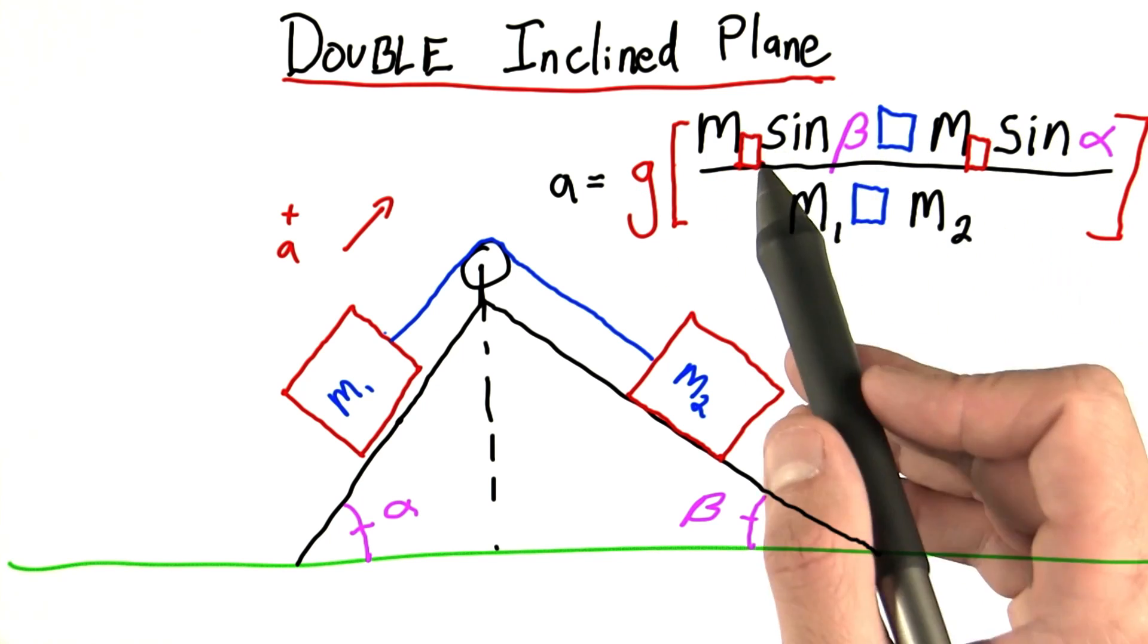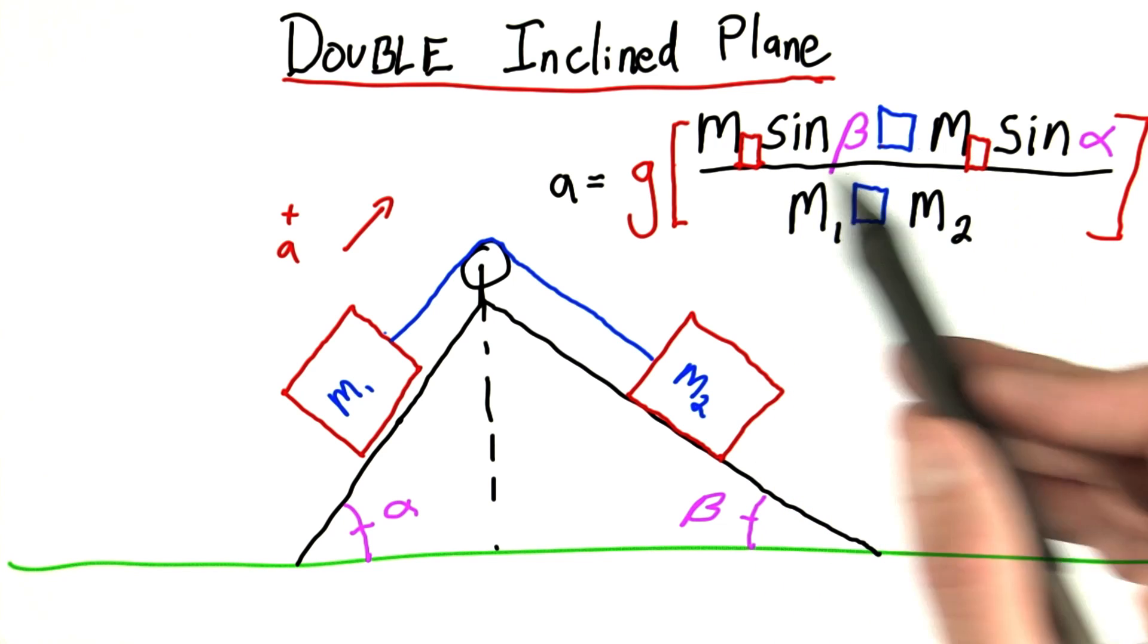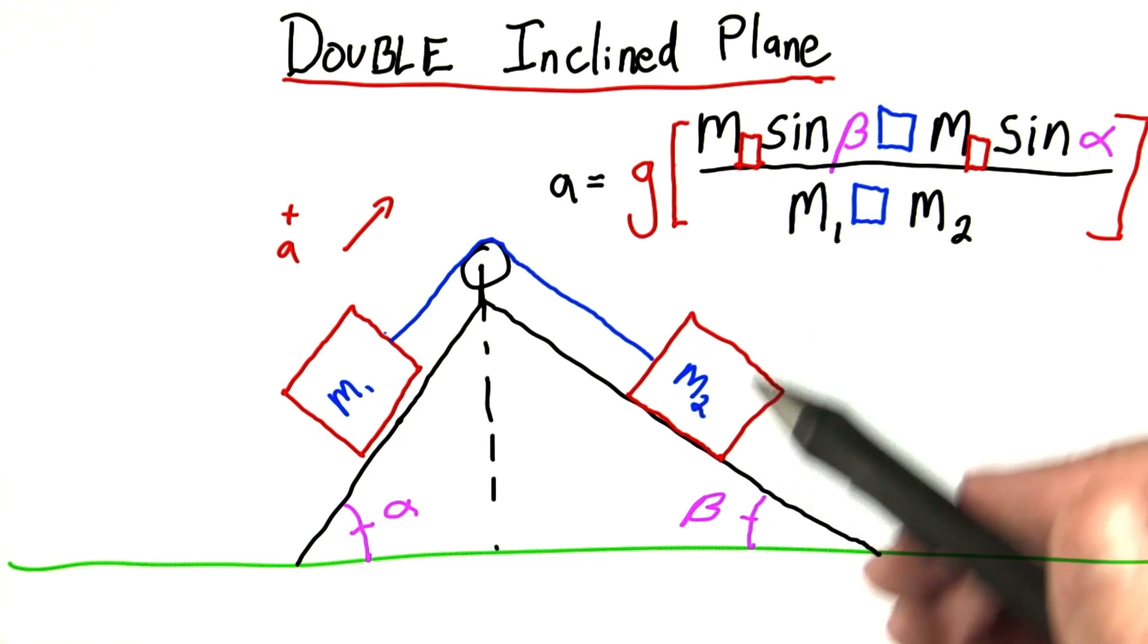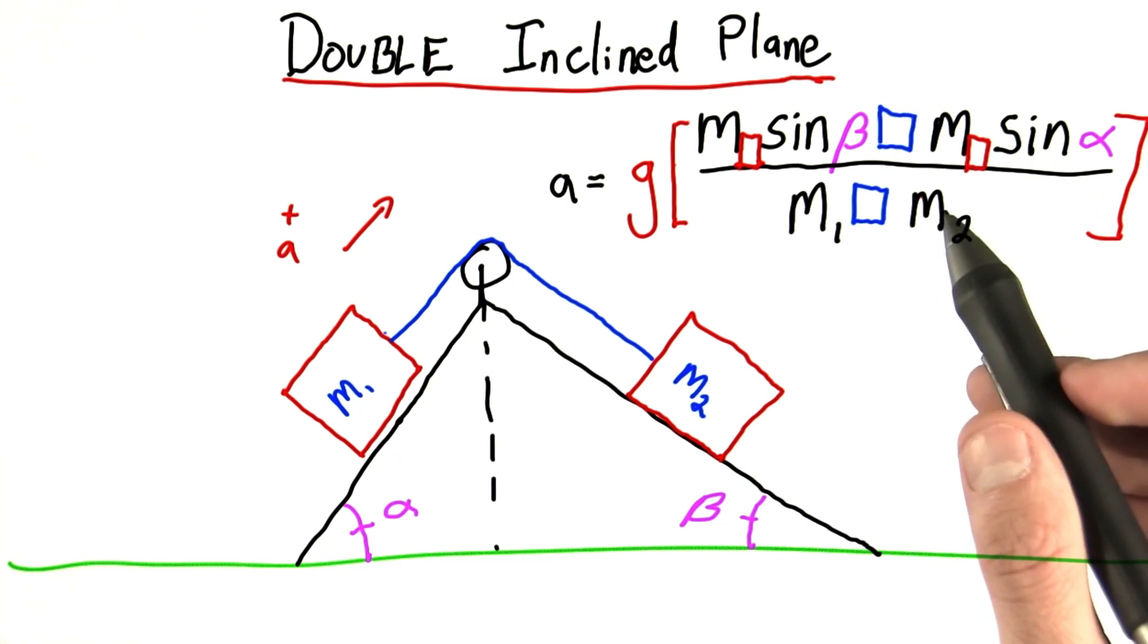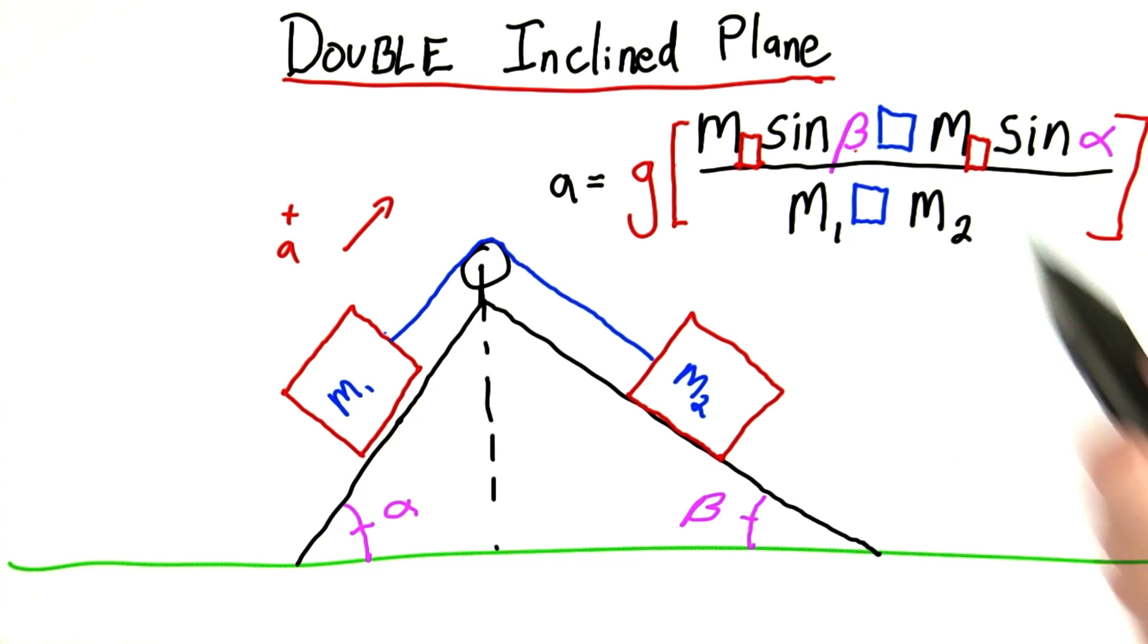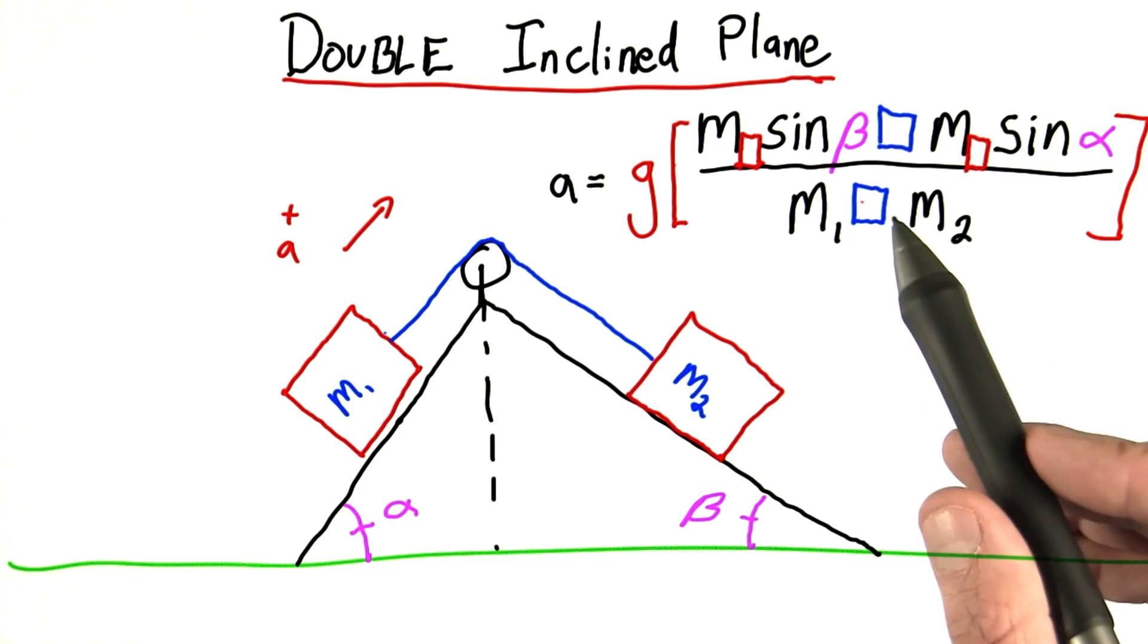And what I want you to do is, in each of the red boxes, put either a 1 or a 2. If the relevant mass is mass 1, you put a 1; 2, you put a 2. And in the blue boxes, I want you to put either a plus, a minus, multiplication sign or division sign, depending on what you think makes sense.